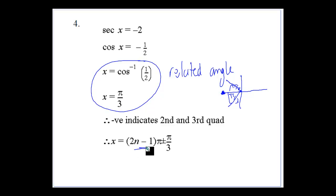2n minus 1 always will give us an odd number. No matter what n is, that gives us an odd number. Multiply by π and then add or subtract π/3 and that gives us our general equation.